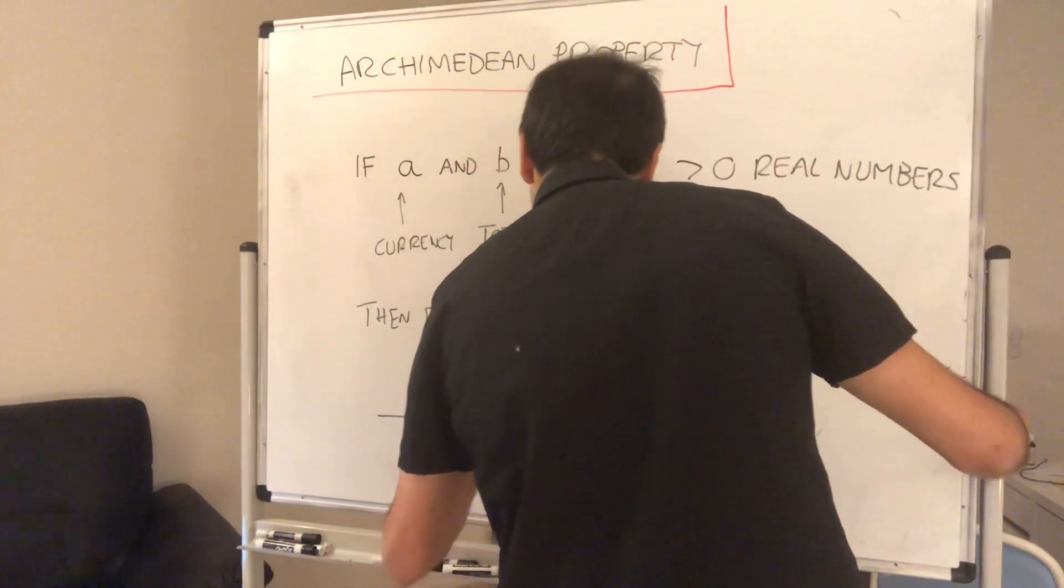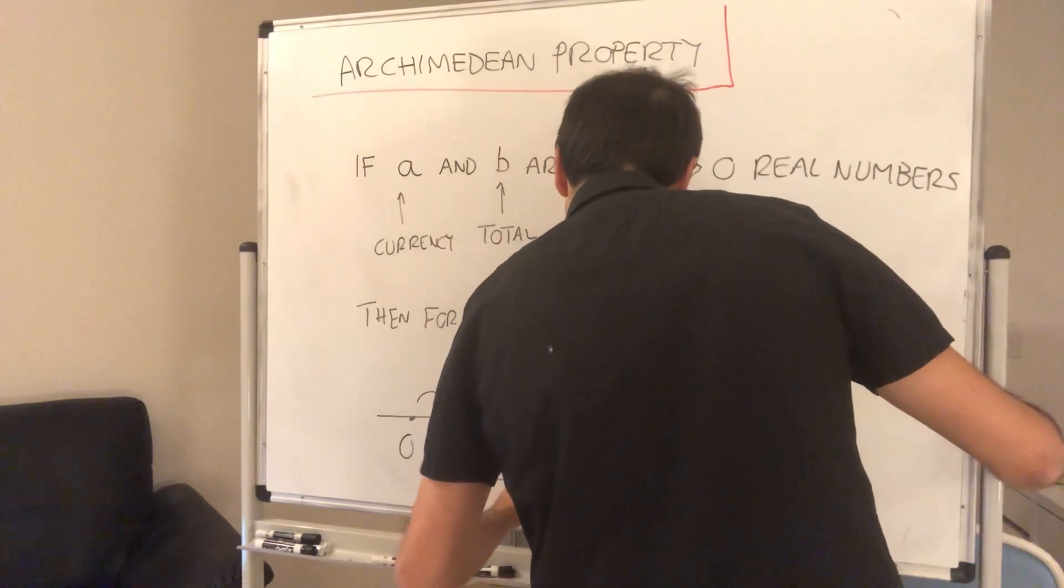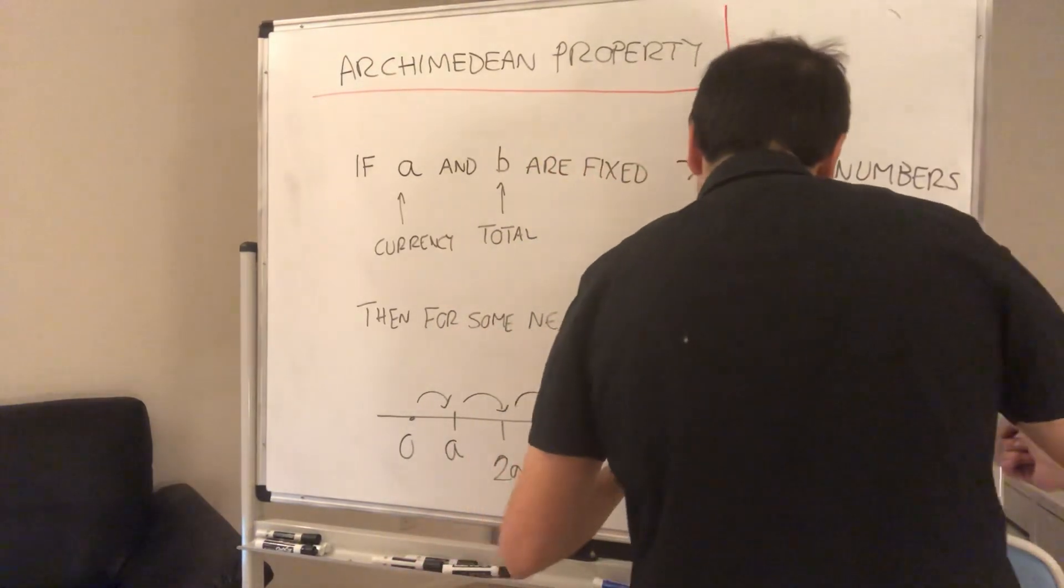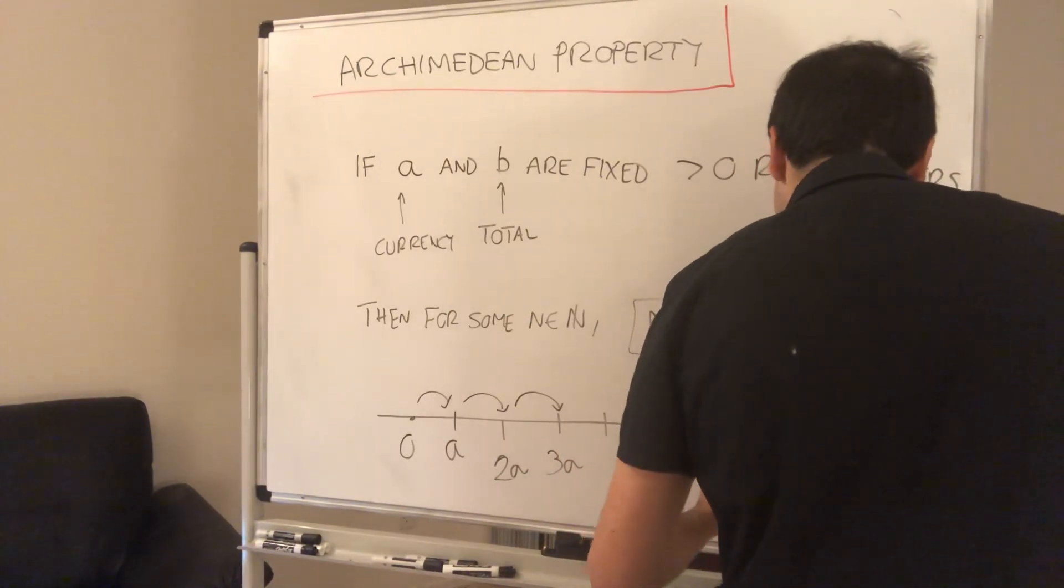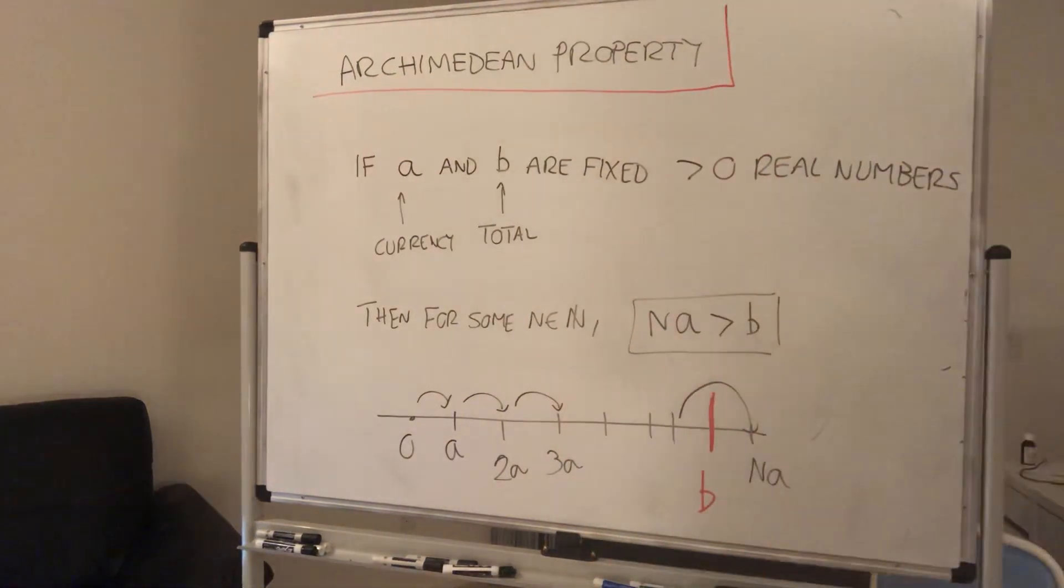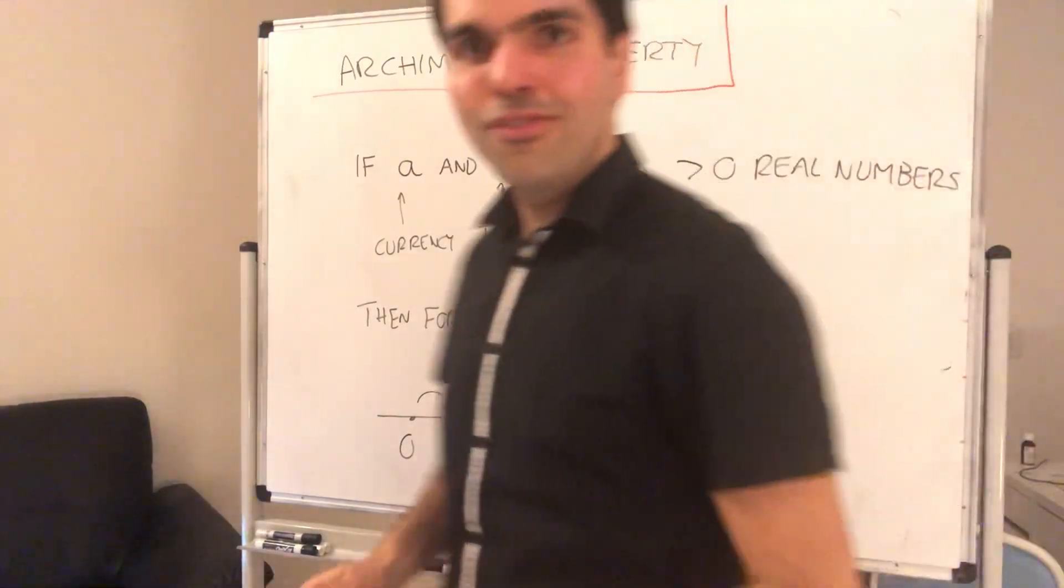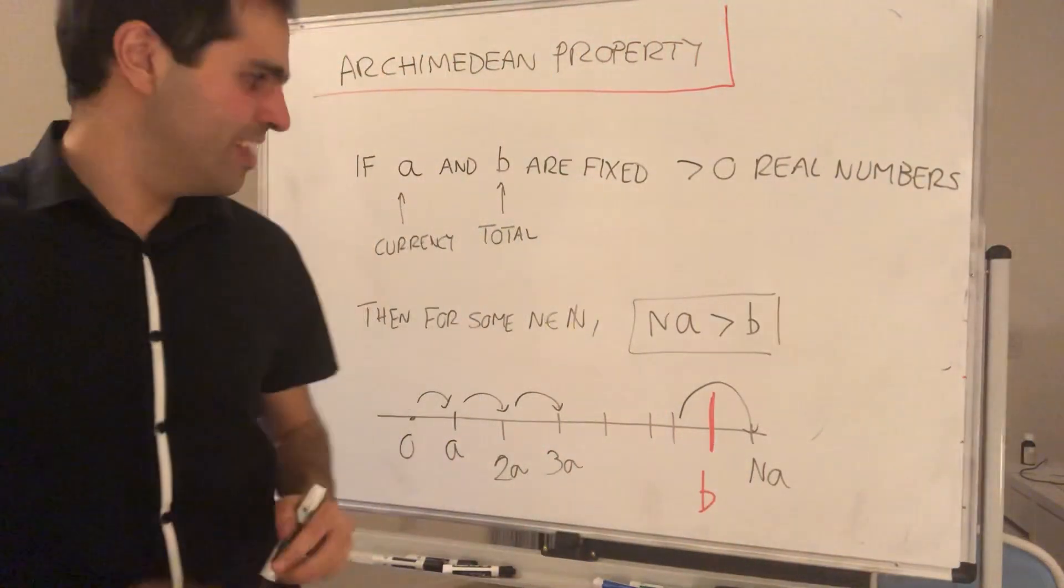Just by going in A steps. So this is 2A, this is 3A, et cetera. And at some point you can hop like a bunny and get above A.